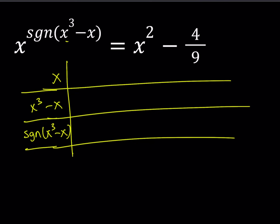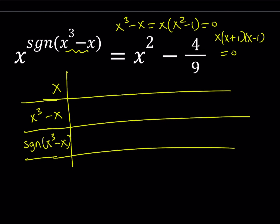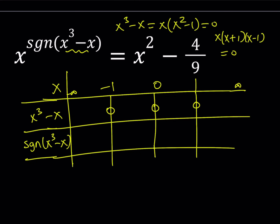We have to find the critical values. Let me set x cubed minus x equal to 0. This factors as x times (x+1) times (x-1) equals 0, giving values x equals negative 1, 0, and 1. Based on the definition of the signum function, between negative infinity and negative 1 the function x³-x is negative, then positive, then negative, then positive — since none are double roots, the sign changes every time. So signum of x³-x is negative 1, then positive 1, then negative 1, then positive 1 in those intervals, and 0 at the critical points.